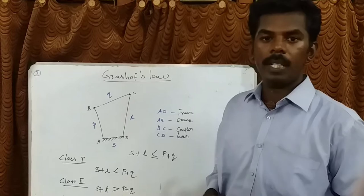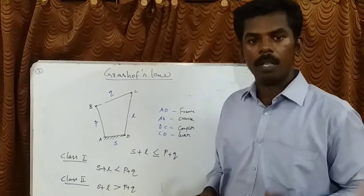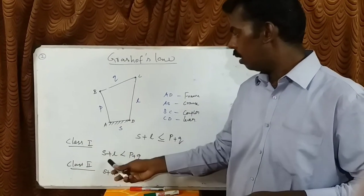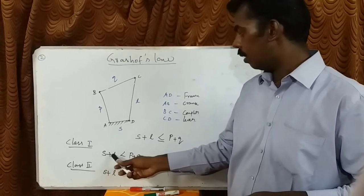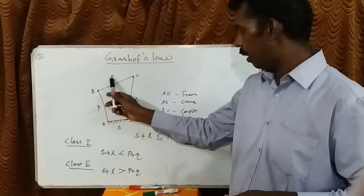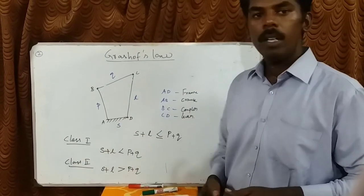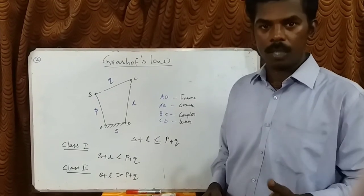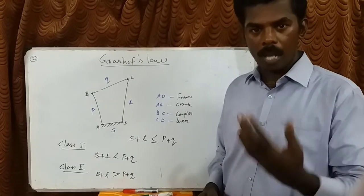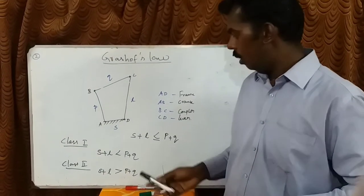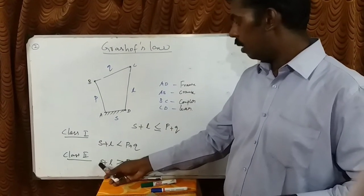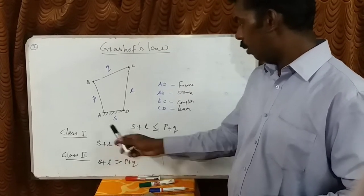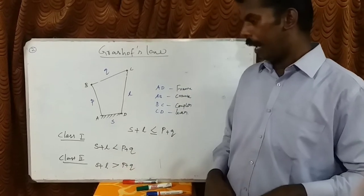If the mechanism satisfies Grashoff's law, then the mechanism under all inversions belongs to the class 1 mechanism — that means the sum of the shortest and longest link is less than the other two links P and Q. If the sum of the shortest and longest link is greater than P plus Q, this is called the class 2 mechanism.